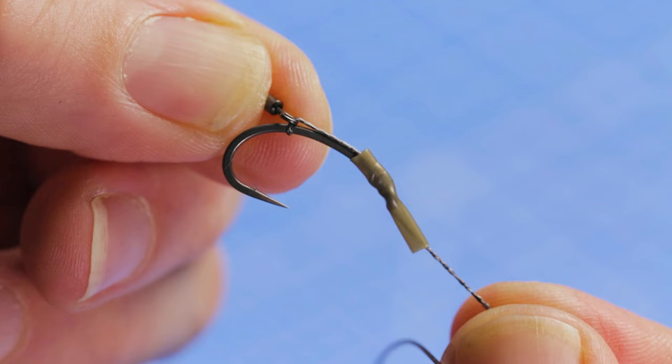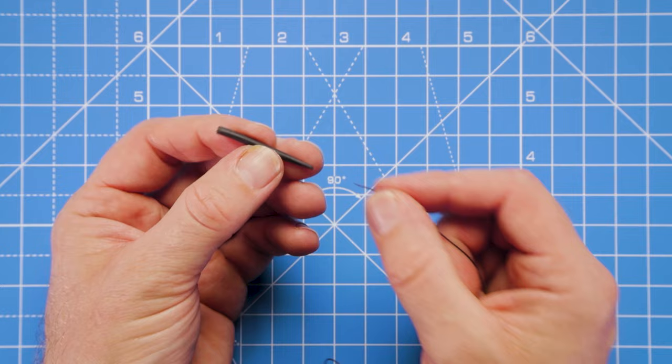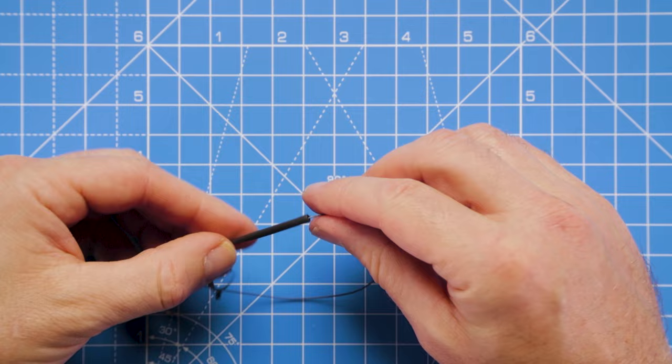Okay, now we can add the anti-tangle sleeve. Just thread the hook link through that. That's really going to neaten up one end of the rig and obviously help prevent tangles in the process.